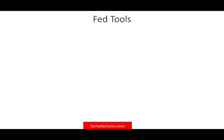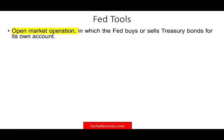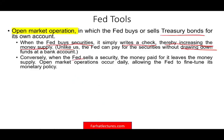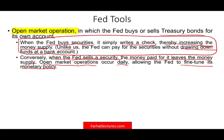The Fed uses several tools. One is open market operations — the Fed buys and sells Treasury bonds from its own account. When it buys securities, it simply writes a check, thereby increasing the money supply. Unlike regular banks, the Federal Reserve can write checks without drawing down funds — it's essentially unlimited. When the Fed sells securities, the money paid for them leaves the money supply, effectively sucking money out. Open market operations occur daily, allowing the Fed to fine-tune its monetary policy. Right now, mostly what's happening is the Fed buying — essentially printing money.